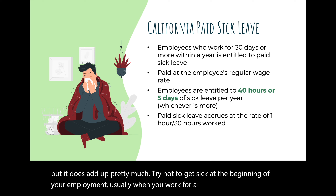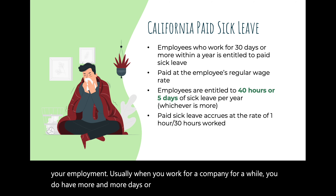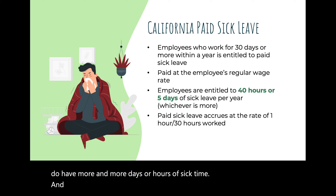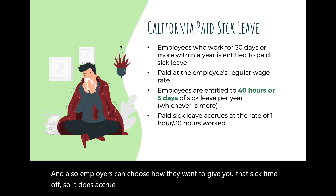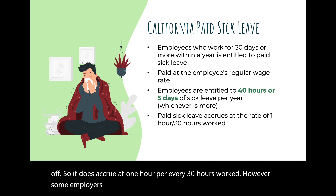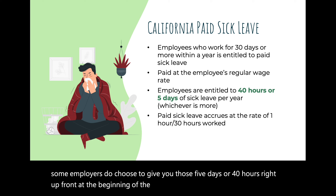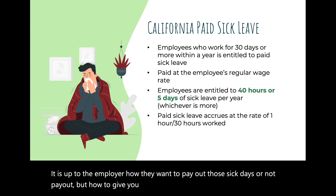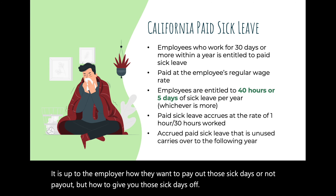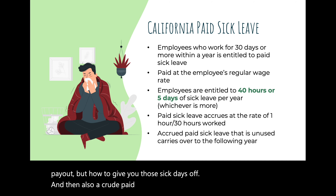Employers can choose how they want to give you sick time off. It accrues at one hour per every 30 hours worked; however, some employers choose to give you those five days or 40 hours right up front at the beginning of the 12-month period. Accrued paid sick leave, if unused, carries over to the following year, with a cap of 80 hours maximum and 10 days of paid sick leave.